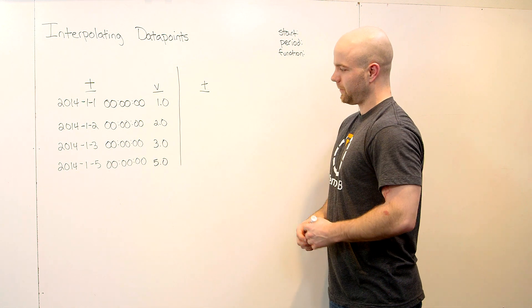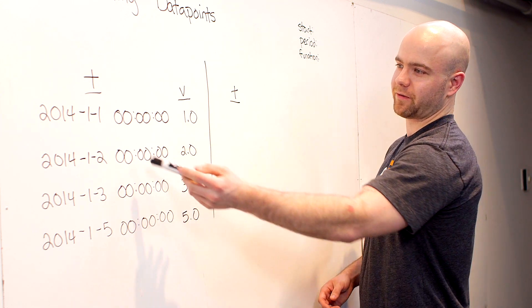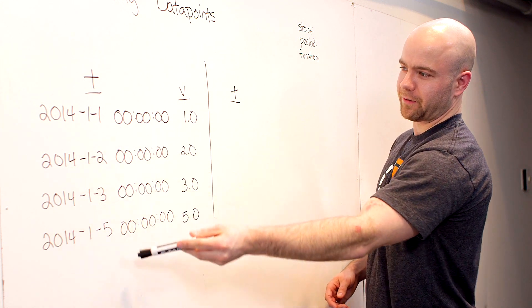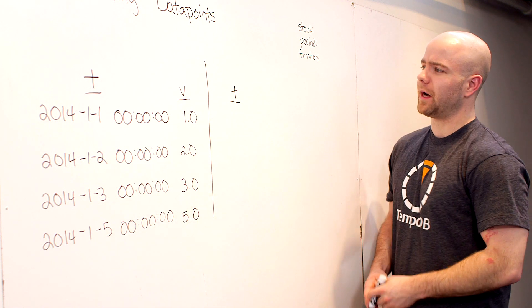We're going to start our interpolation example with a basic time series with points at January 1st, 2nd, 3rd, and 5th at midnight. The values here are just 1, 2, 3, and 5.